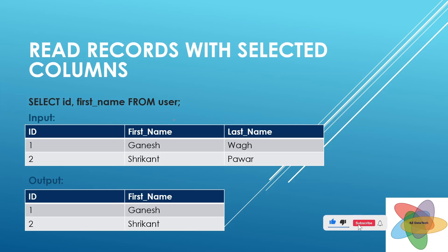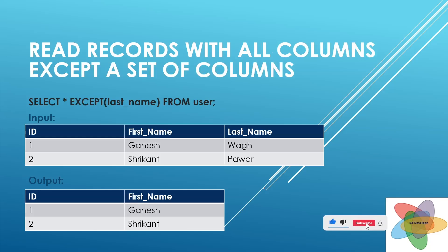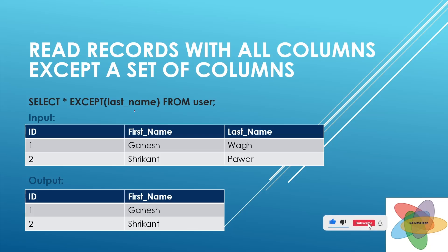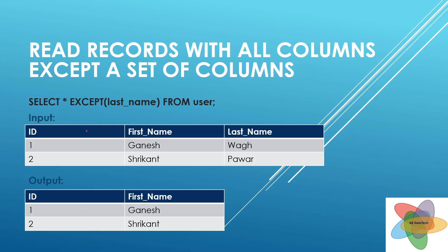Now if we don't want all the columns — we just need id and first_name — then we use something like SELECT id, first_name FROM user, and we will get only id and first_name. So if we want only some selected columns in our resultant output, we specify those columns in our SELECT clause and we get records with only those selected columns.